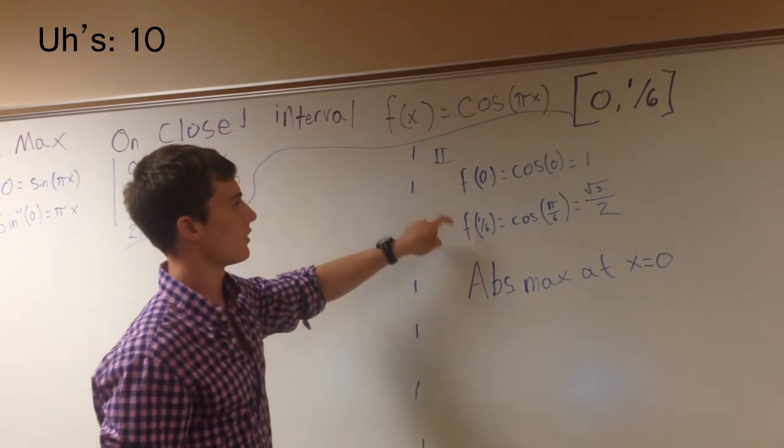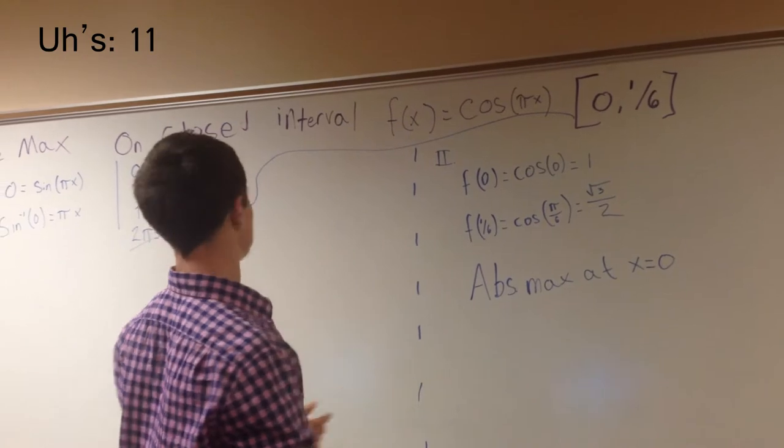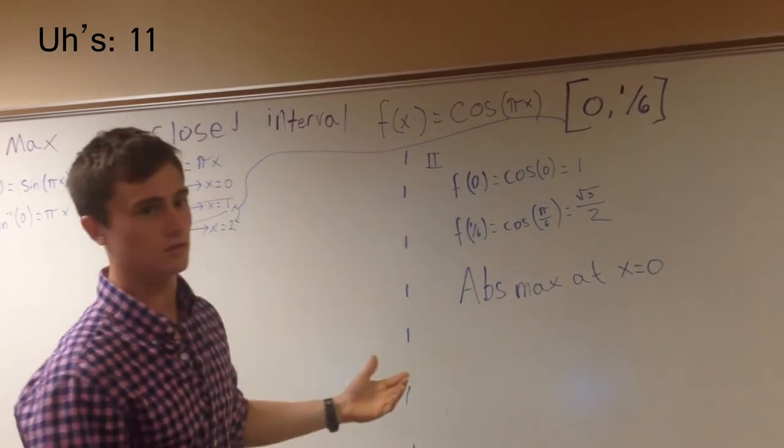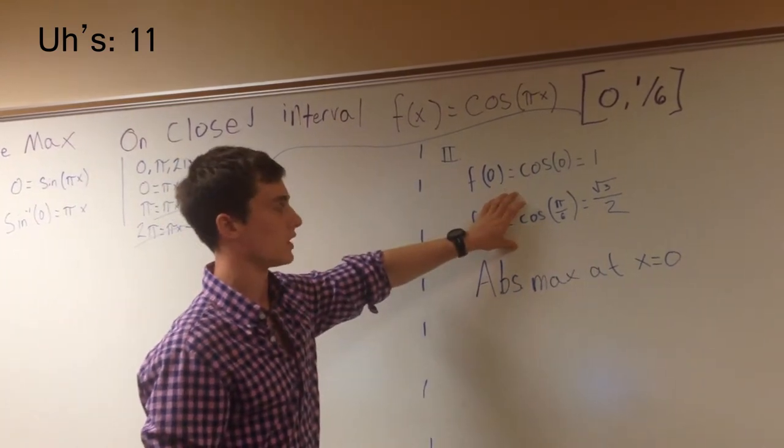So, that means we can have two possible maxes or mins. We have f of zero and f of one-sixth. You've plugged these in. You plug these into the original function, mind you, because if you plug it into the derivative, you're going to get the slope, which is not what we're looking for. We're looking for y values from the original function.